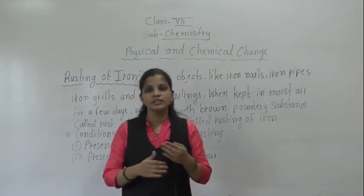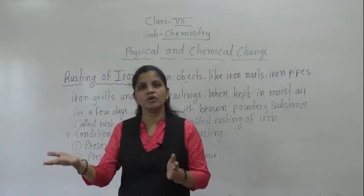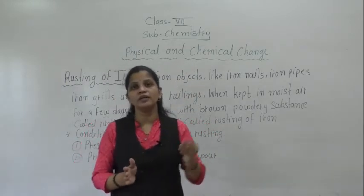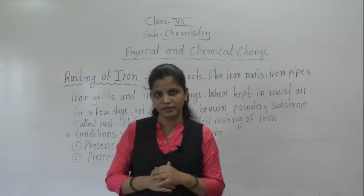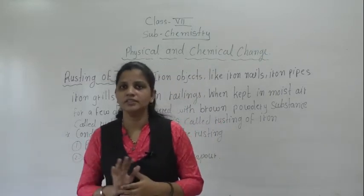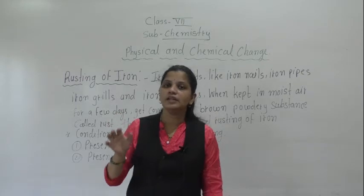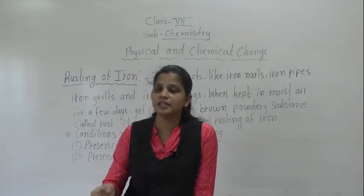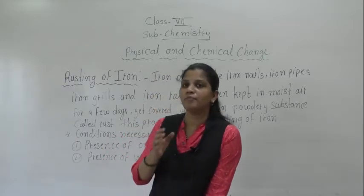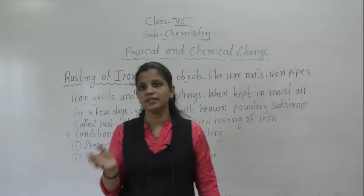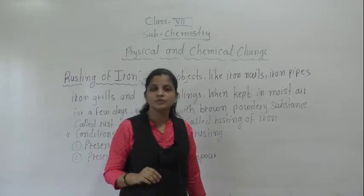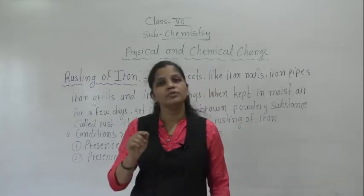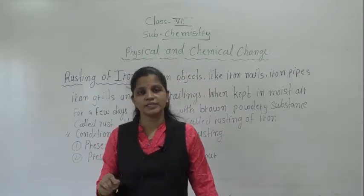When this chemical reaction occurs — iron plus oxygen plus water — it forms a brown color layer on that iron nail or any iron thing. That brown color layer is known as rust. In the activity we performed before, I showed you that iron nail — that brown color layer is known as rust.